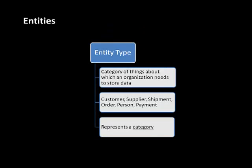Now we jump into entity relationship modeling, because entity relationship modeling is what allows you to design relational databases. We are not going to be designing relational databases — we are only going to be looking at databases that have been designed. But when we look at an ER diagram, we need to be able to fully understand it. The basic things in entity relationship diagrams are, of course, entities and relationships. An entity is essentially a category of things about which an organization needs to store data — things like customer, supplier, shipment, project. All of these are entities because we want to keep track of who our customers are, who our suppliers are, what the shipments are.